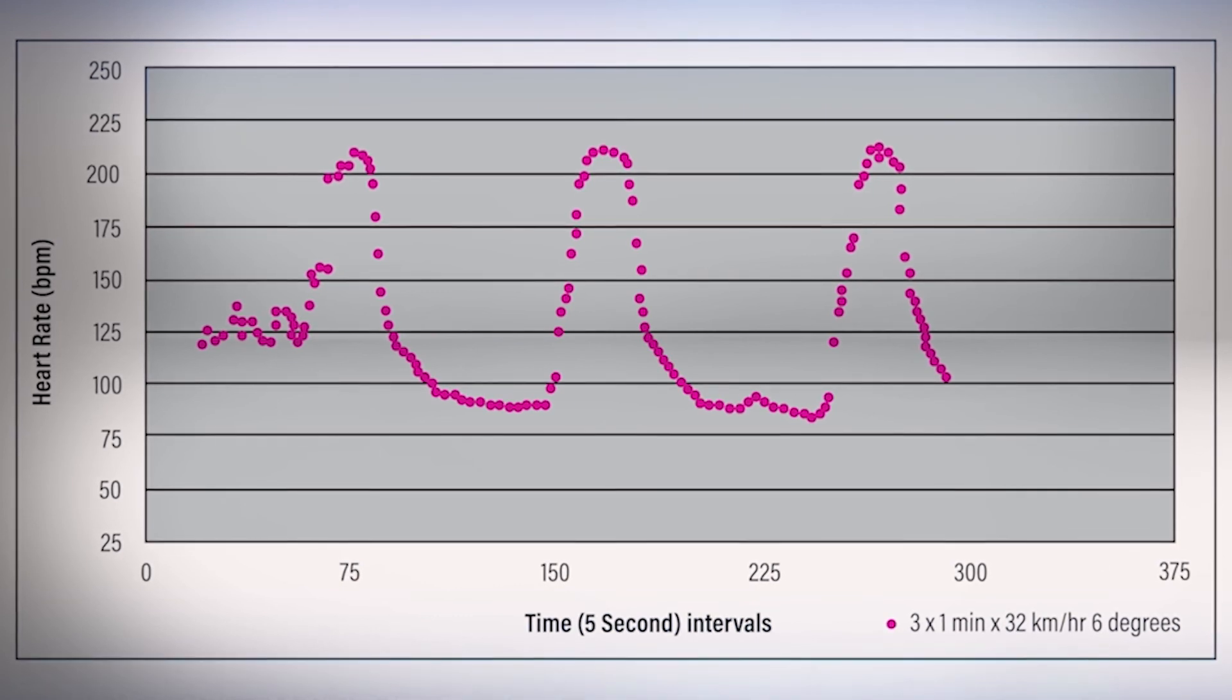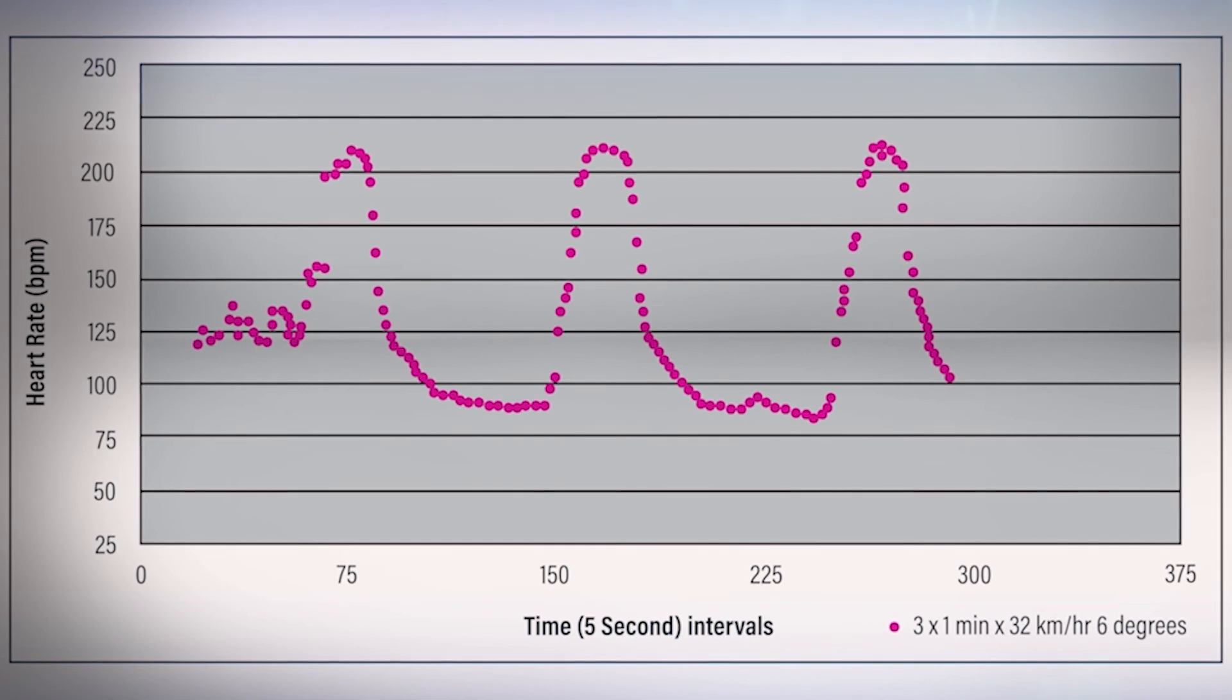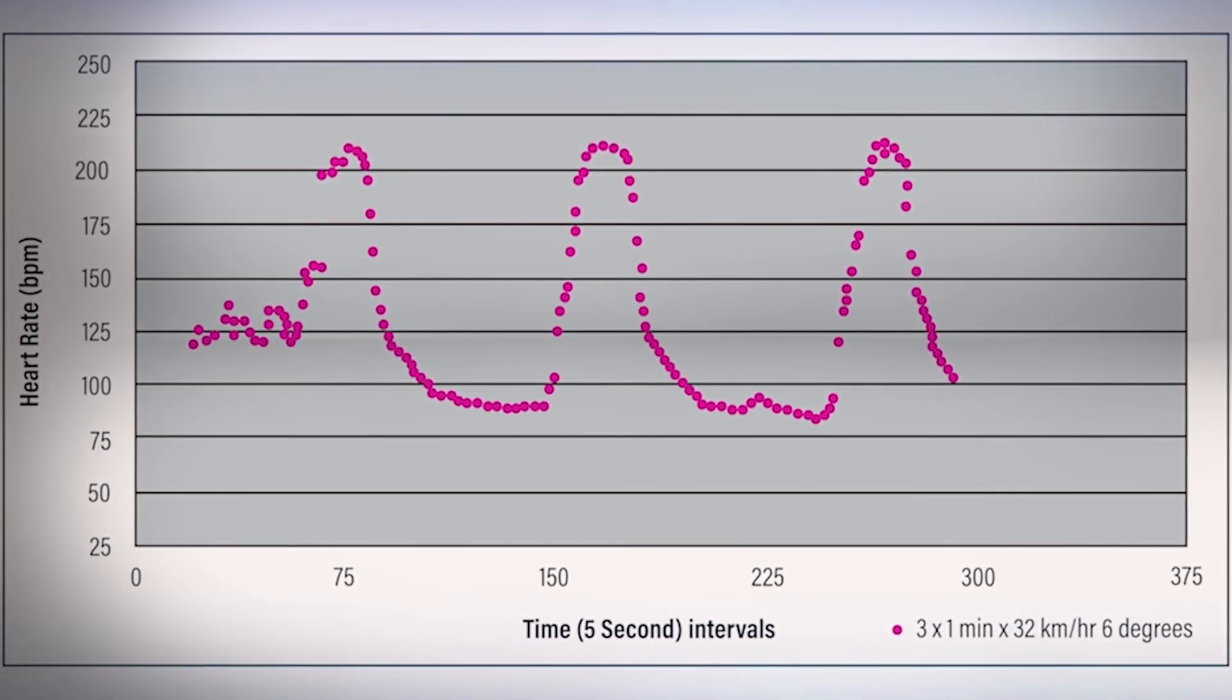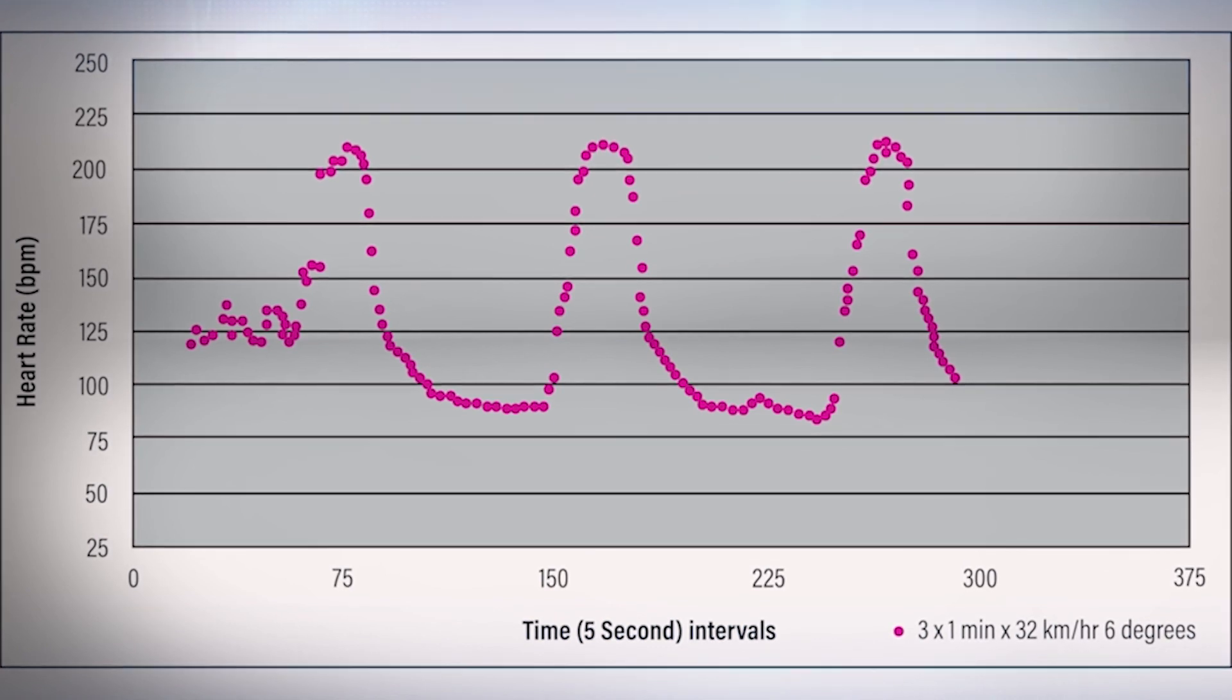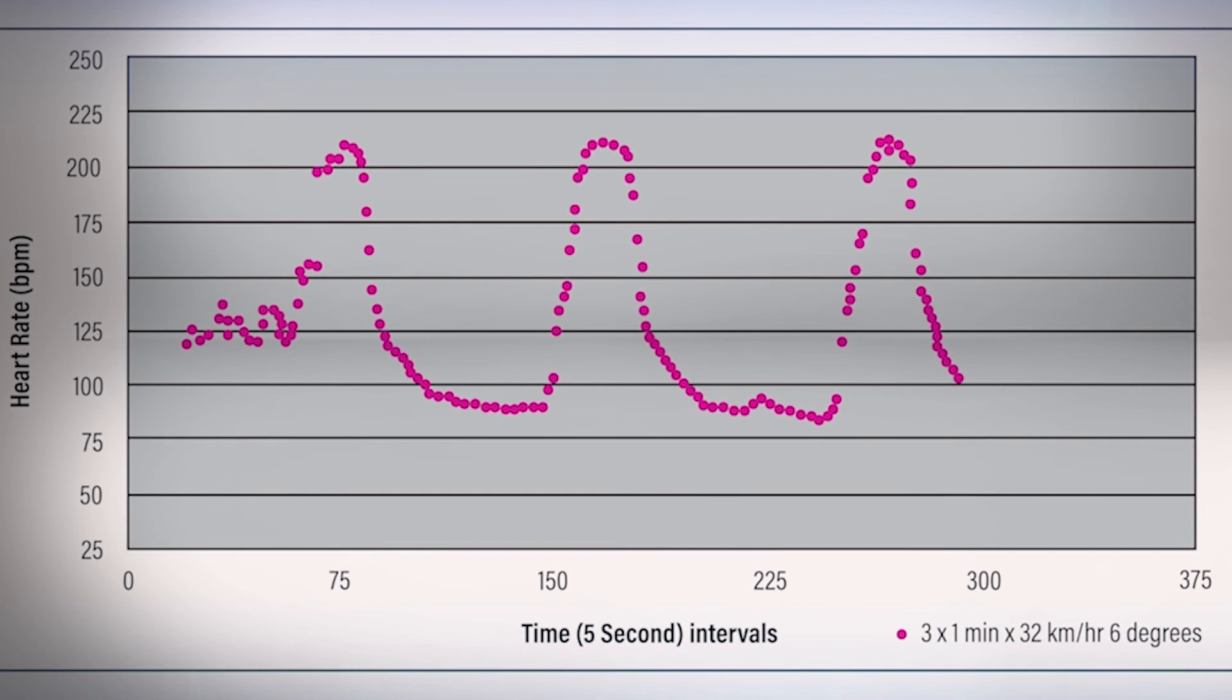Heart rate increases dramatically with the beginning of exercise, plateaus out, and then drops quickly in the recovery period. So in each of those gallops, you can see from the heart rate responses that the horse is coping very well with the exercise session. Thank you.